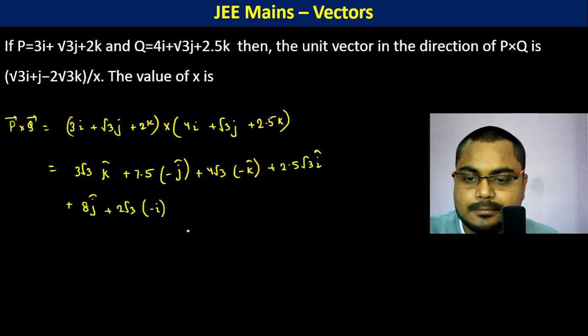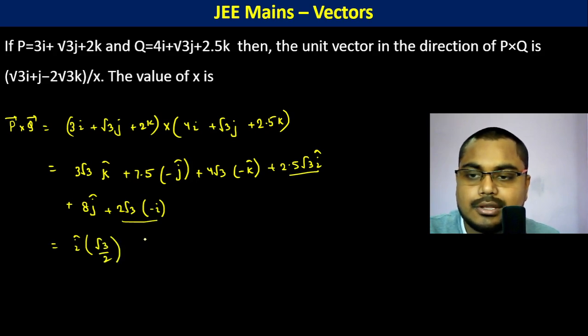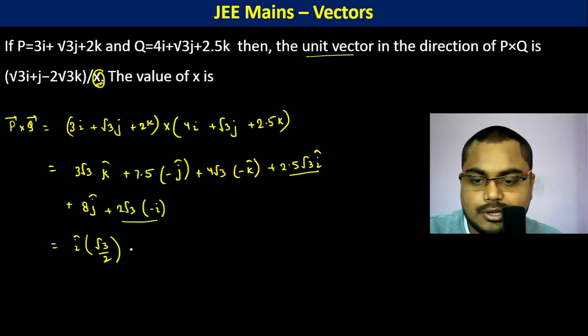Okay, now in i cap, look carefully, 2.5 root 3 and 2 root 3, this is root 3 by 2. So from here we can find out. Now we have to find the unit vector. Calculate everything. In j cap, we have 7.5 and 8, this is again 1 by 2.